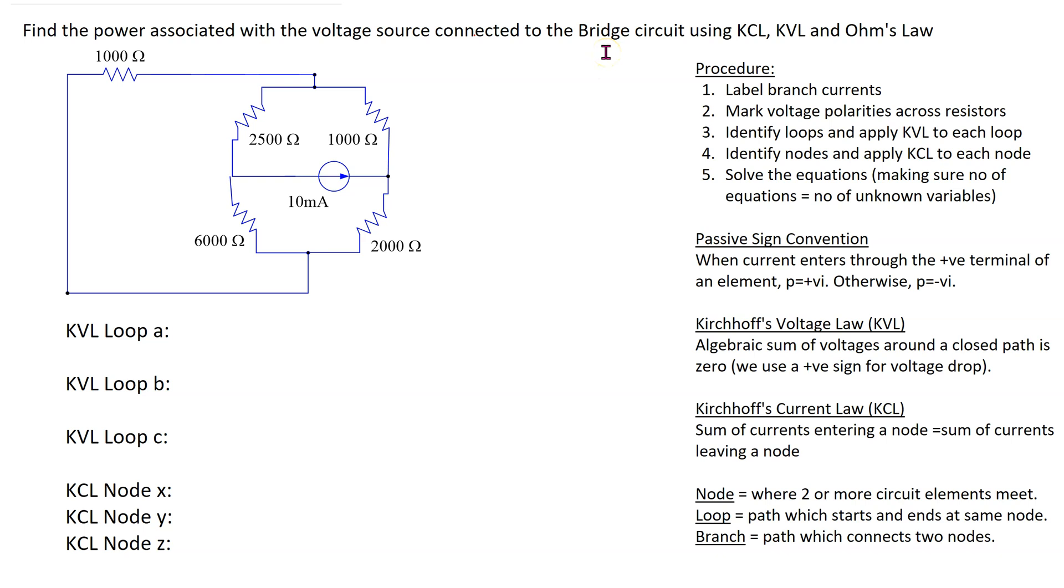The main steps involved are shown here. The first is to label the branch currents. Recall that a branch is a path which connects two nodes.